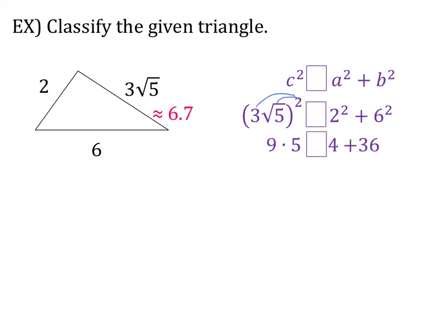Remember, we need to square both pieces of our radical term. So 3 squared is 9, and the square root of 5 squared, the square root and the radical cancel out, so you're just left with 5. Box, 4 plus 36. So that gives you 45 and 40. So 45 is larger than 40. So that means C squared is bigger than A squared plus B squared. So that means this triangle is obtuse.